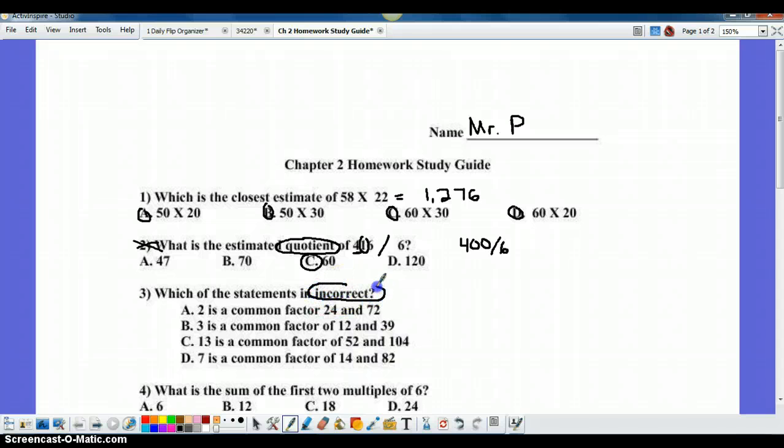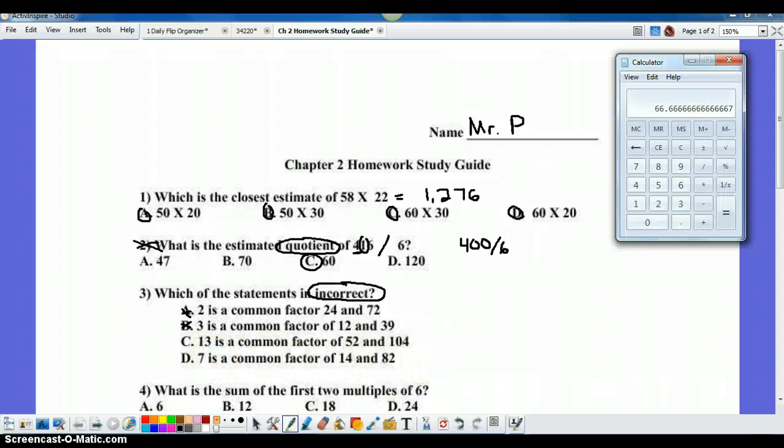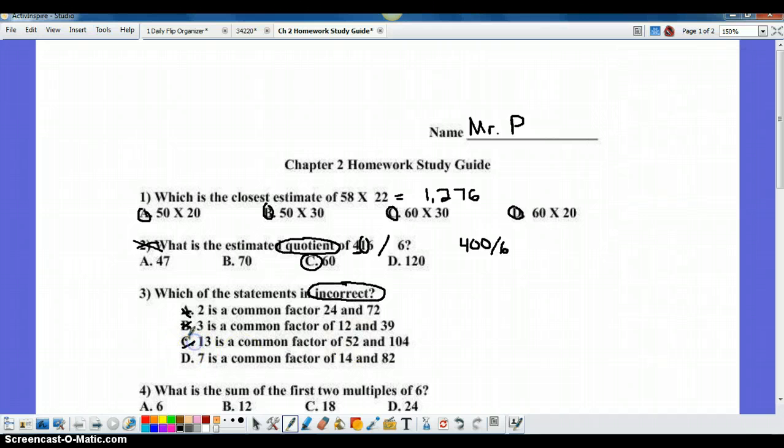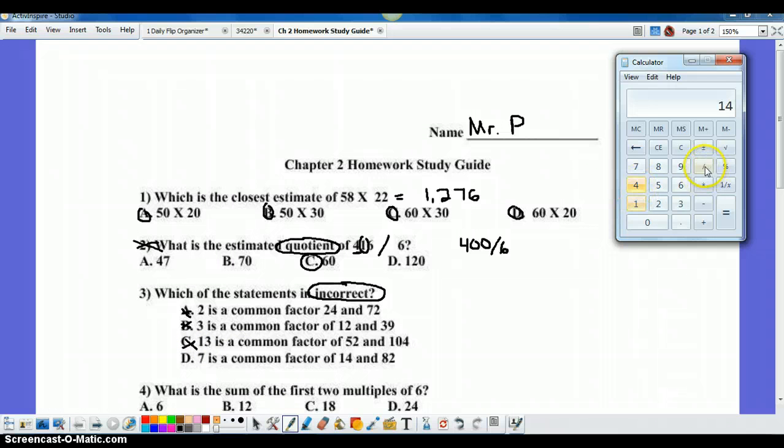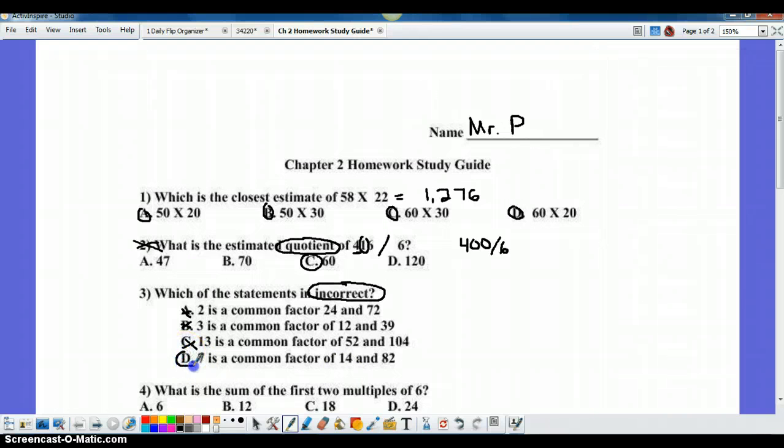Which statement is incorrect? I'm trying to warn the students to make sure that they are aware of the directions, because many times they get stumped on a question like this. You've got to make sure you're answering the correct question. When you go through, you're going to see 2 is a common factor of 24 and 72. Even though that's true, it's not the right answer, because we're looking for the incorrect one. I know that 3 is also a factor of 12 and of 39, so B is not the correct answer. 13 into 52 or 104, or 7 into 14 and 82. If you're not sure, the way you decide if something is an actual factor is you divide. So I'm going to take 52 and divide it by 13, and as long as I don't get a decimal, that means it's a factor. Then I'm going to take 104 and divide that by 13. I don't get a decimal, which means C is not my answer. I'm willing to bet that D is the answer, but just to double check, 14 divided by 7, that's going to get me 2, and 82 divided by 7 gets me a decimal. Because it's a decimal, that means this one is the incorrect answer.